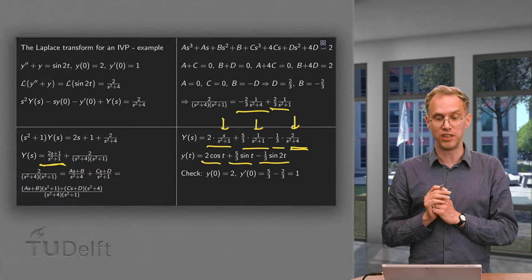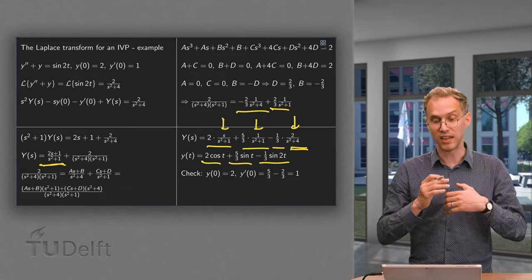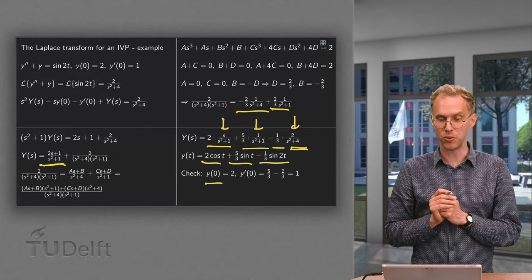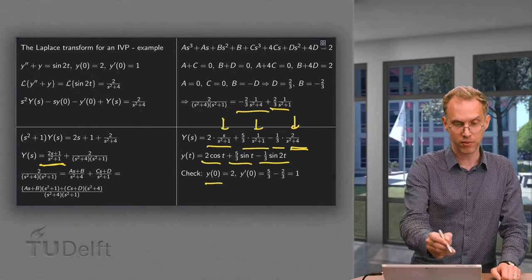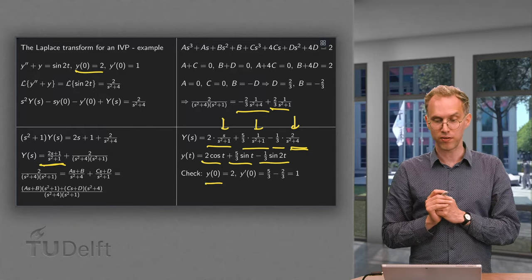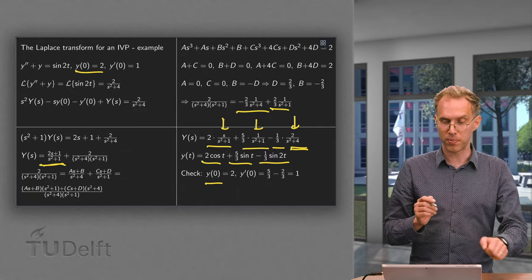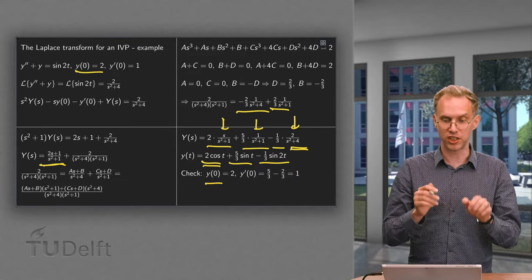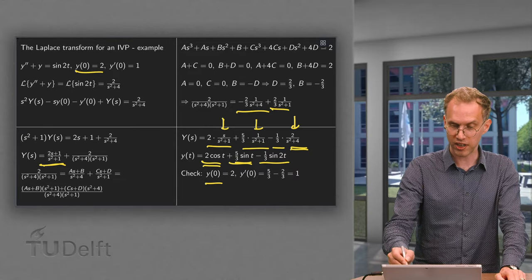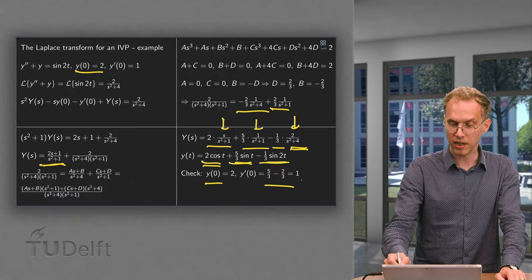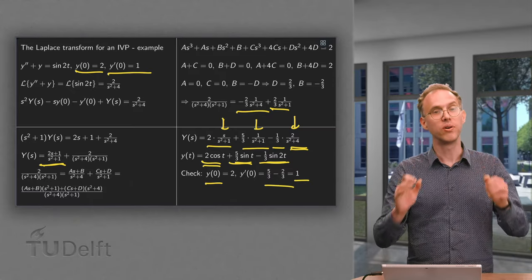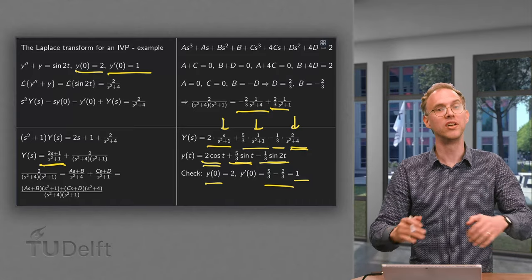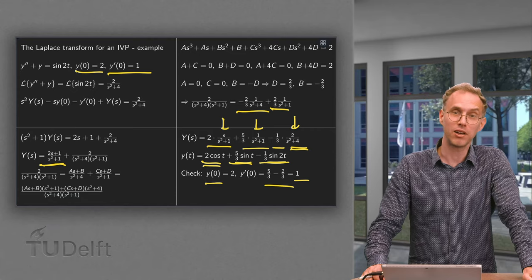This was a lengthy procedure, so it is wise to check the initial conditions. Plugging in y(0): 2 + 0 − 0 = 2, which is correct. For y'(0): differentiating gives −2·sin(0) + (5/3)·cos(0) − (2/3)·cos(0) = 0 + 5/3 − 2/3 = 1, which is indeed correct. So checking the initial conditions is the way to verify you have not made any calculation errors.